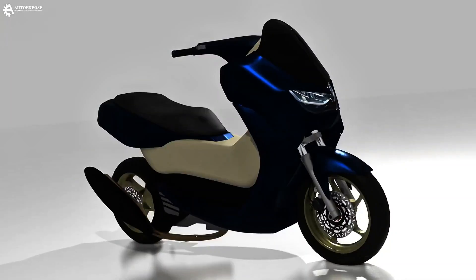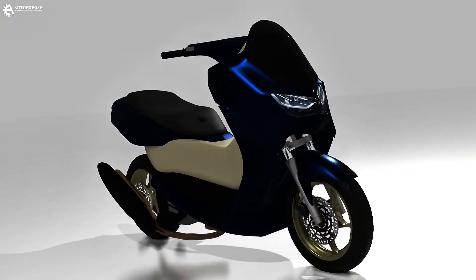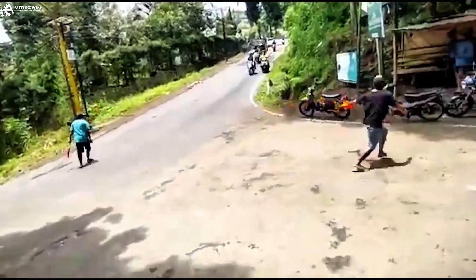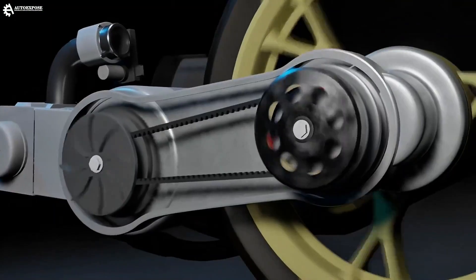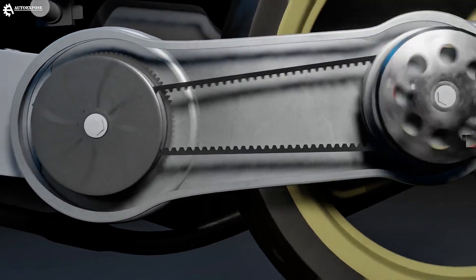This is often the case with automatic motorcycles, where when going downhill, the motorcycle slides and relies solely on the brakes to hold it back. Now, let's dissect it further.